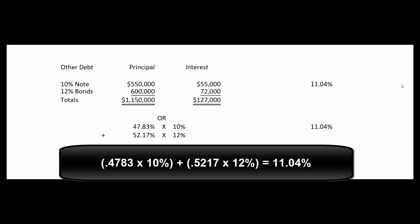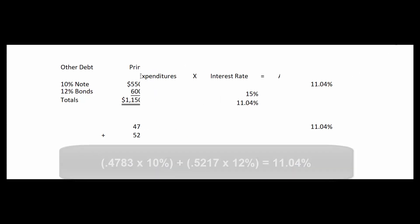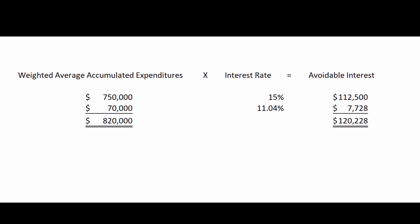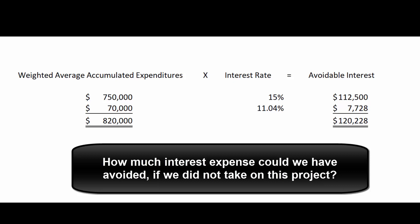Now we calculate how much interest to capitalize — the avoidable interest. Our WAAE is $820,000. We specifically borrowed $750,000 at 15%, generating $112,500 of interest. The remaining $70,000 is theoretically financed from our other debt at the 11.04% weighted average rate, generating $7,728. Adding these together: $112,500 + $7,728 = $120,228 of avoidable interest — interest we would not have incurred had we not undertaken this project.